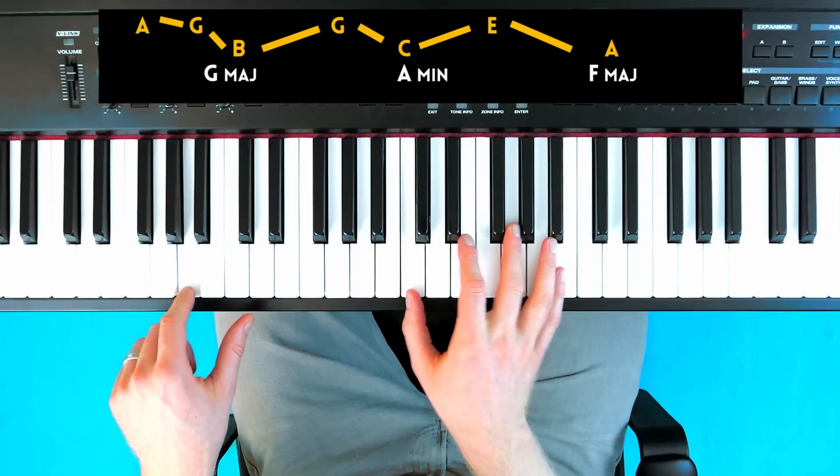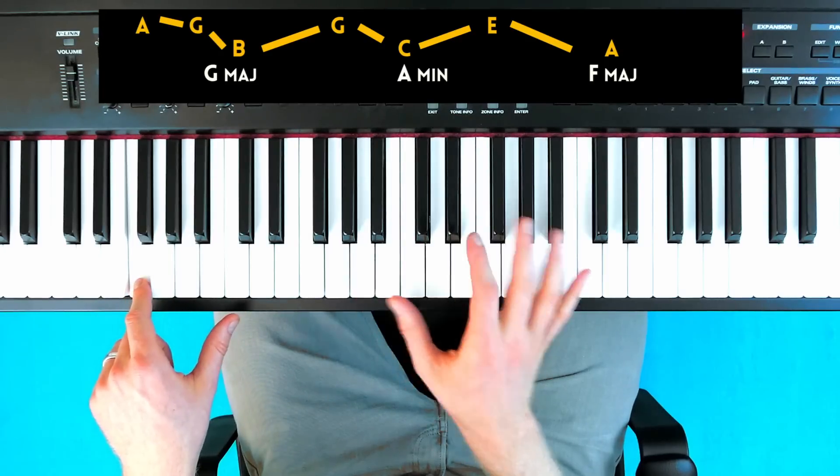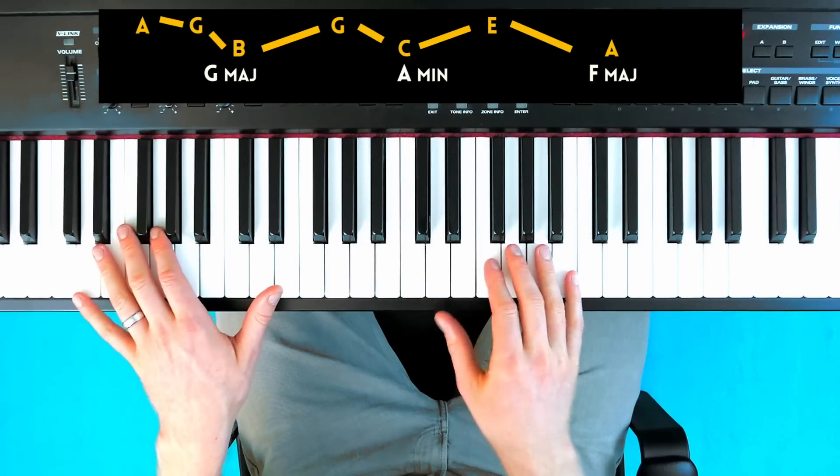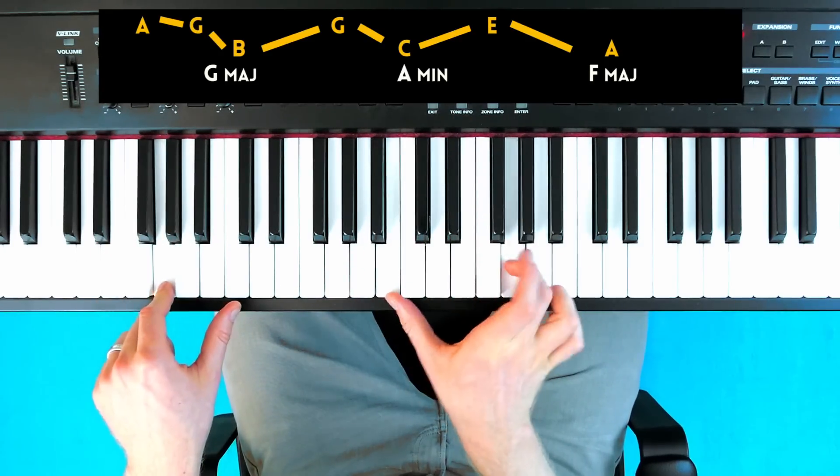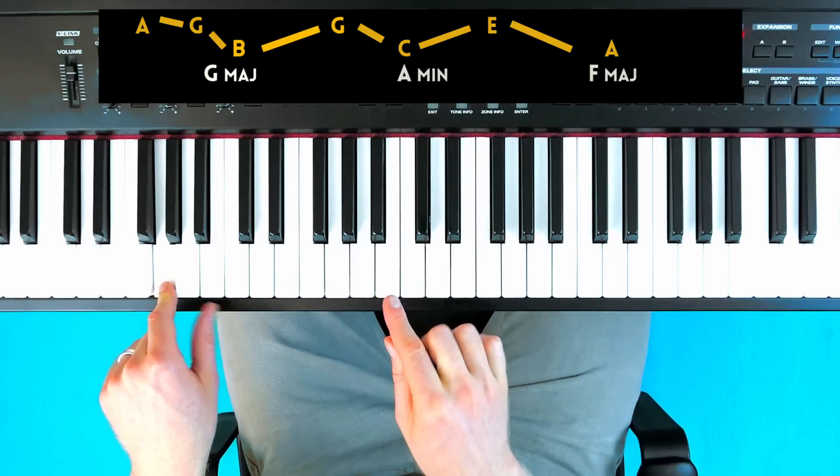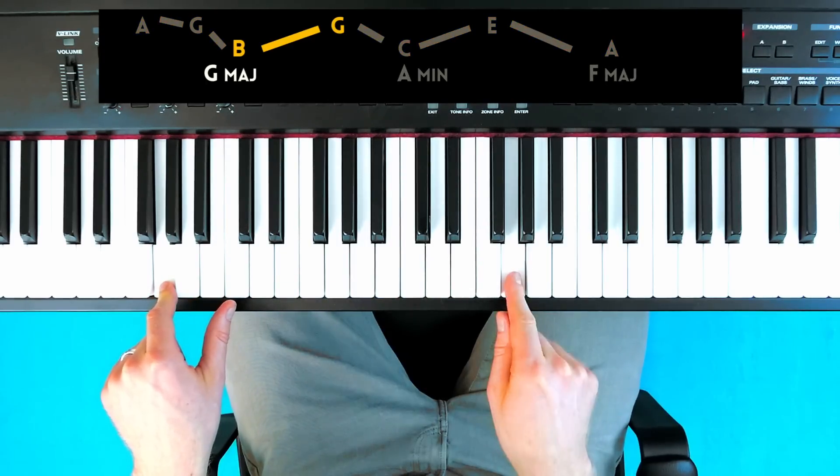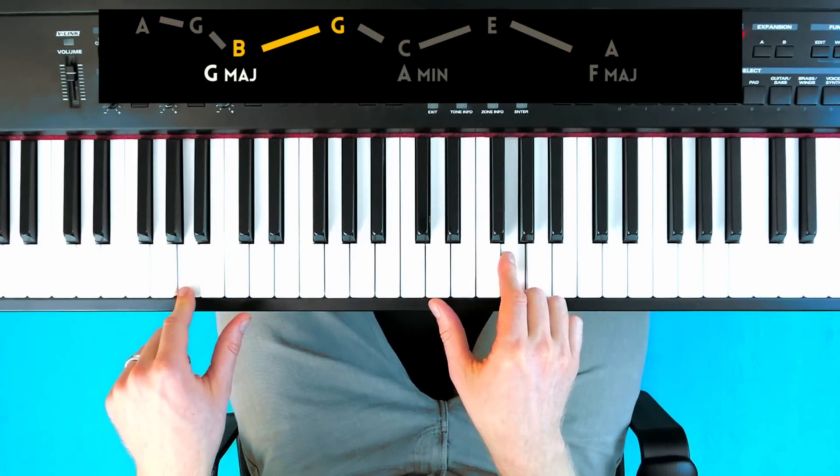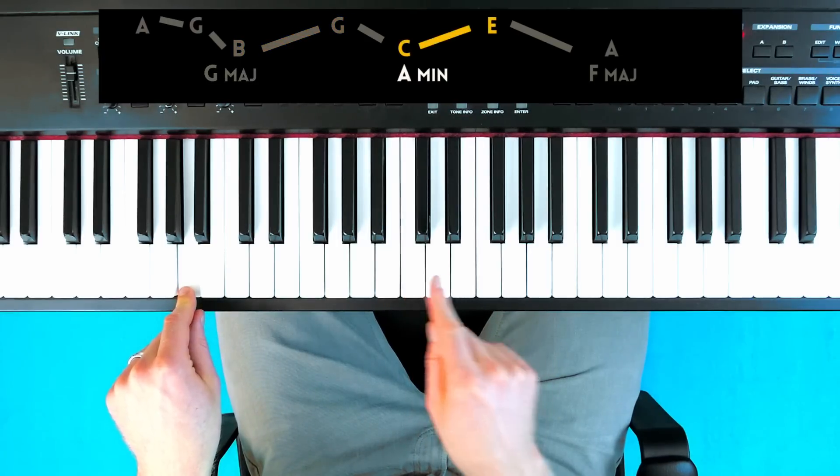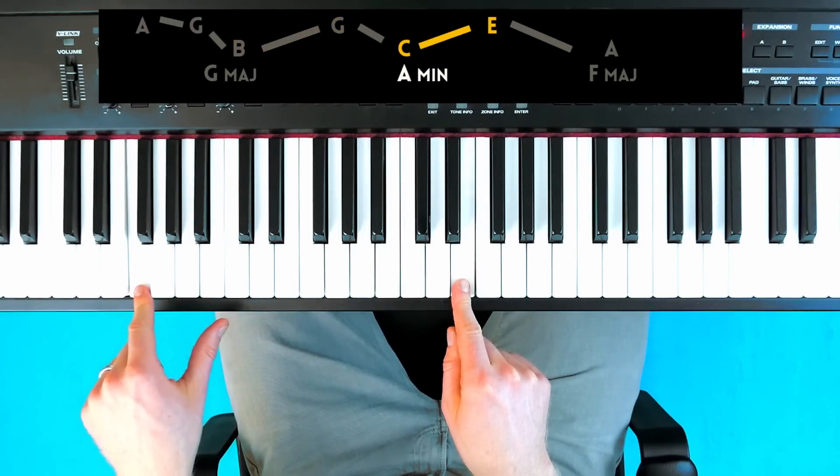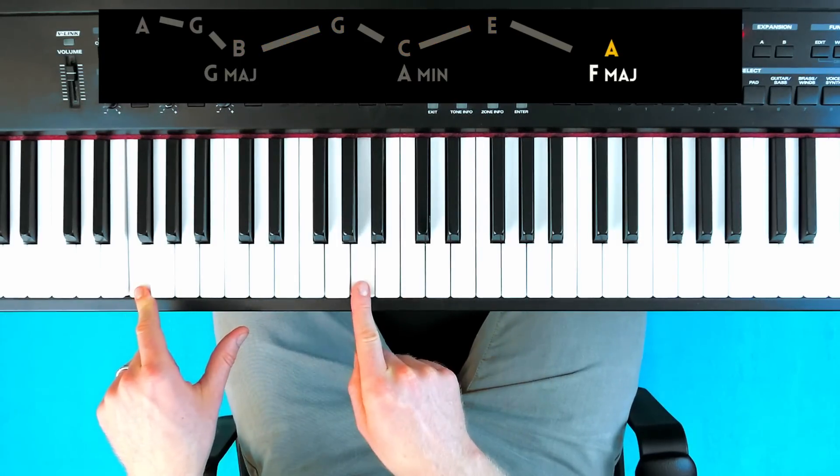Notice that this melody is just arpeggiating the chords. We have a G major chord, so I play B and G. For A minor, C and E. And for F major, A.